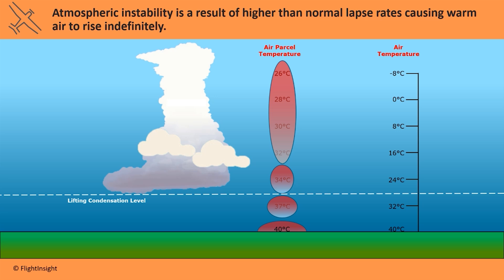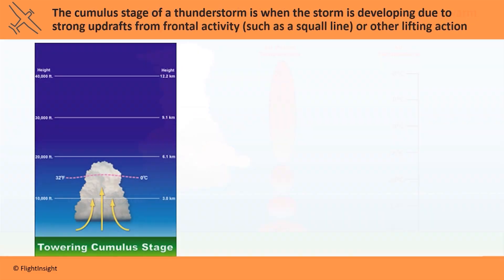The vertical development of thunderclouds, called cumulonimbus clouds, can be very extensive. The first stage of a thunderstorm life cycle is called the cumulus stage, where strong updrafts from that lifting action carry moist air into the atmosphere. The risen air condenses and large water droplets form.